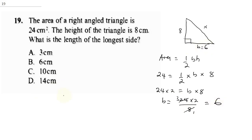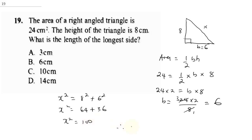Using the Pythagorean theorem: x squared equals 8 squared plus 6 squared, so x squared equals 64 plus 36, which is 100. Therefore x equals the square root of 100, which gives us 10 cm. The correct answer is C.